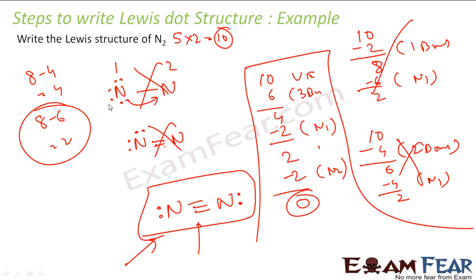So we started with a single bond — didn't work. Nitrogen said it would try a double bond — didn't work either. Then nitrogen said it would try a triple bond, and with that it worked. We got the correct structure for N2 with a triple bond.